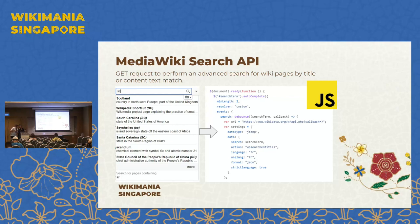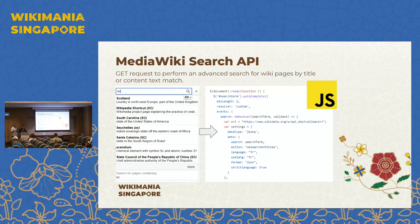One important tool is the MediaWiki Search API, also known as Elasticsearch. It functions as a GET request to perform an advanced search for wiki pages by title or content text match. Here is a JavaScript code example: you define the language of your search, specify JSON format, then convert results into a table. This also works for Wikidata — we use this API to create applications when we need to search for Wikidata items and do something with them.